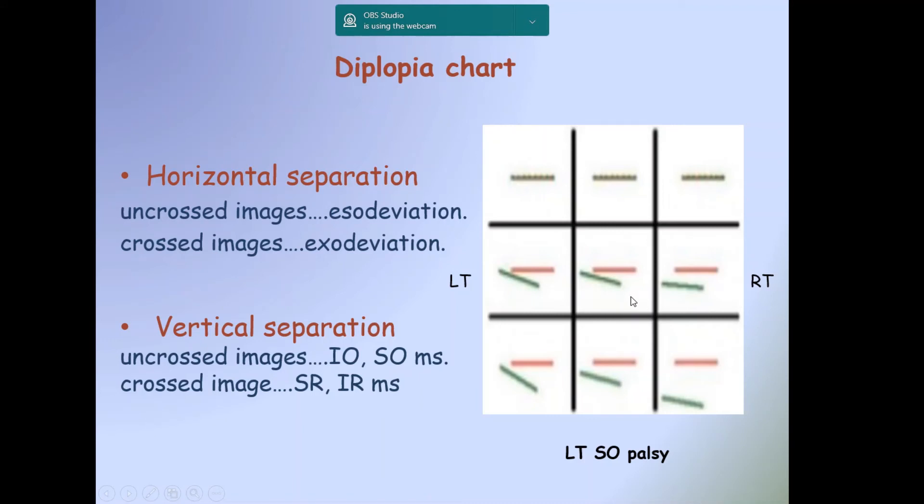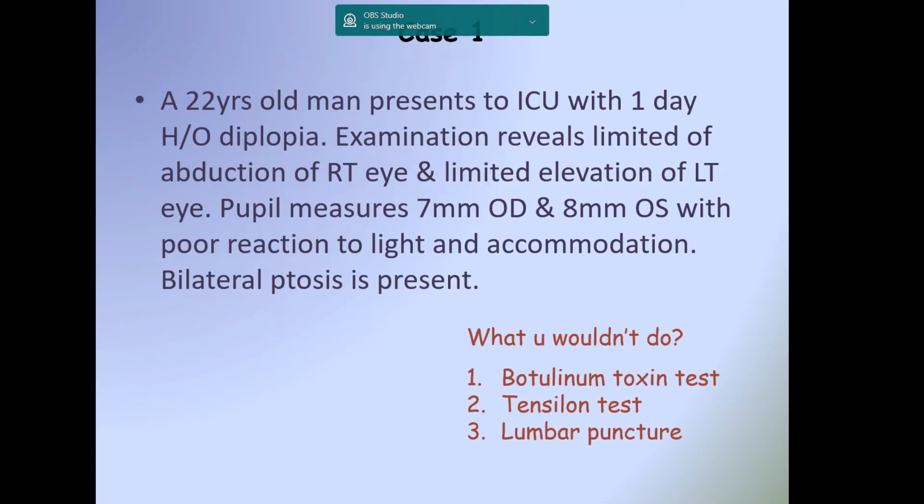Horizontal separation: Uncrossed is eso deviation, crossed is exo deviation. Vertical separation: Uncrossed is obliques, crossed is recti. Here in the diplopia chart, the position of maximum separation is in the right and down gaze or dextro-depression. Elevation here is normal, so the problem is in the depressors of the eye, either right inferior rectus muscle palsy or left superior oblique palsy. The farthest image away is the green one, so it is left superior oblique muscle palsy.